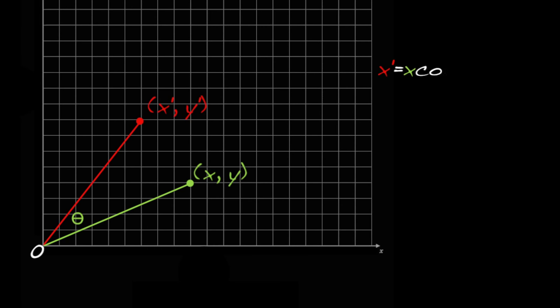X prime equals x cosine theta minus y sine theta. Y prime equals x sine theta plus y cosine theta. So knowing x, y, and theta, you can compute x prime and y prime.